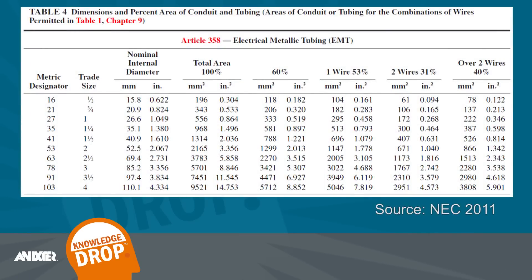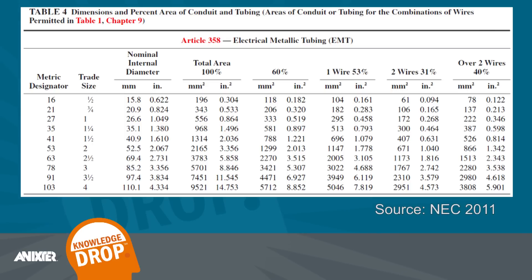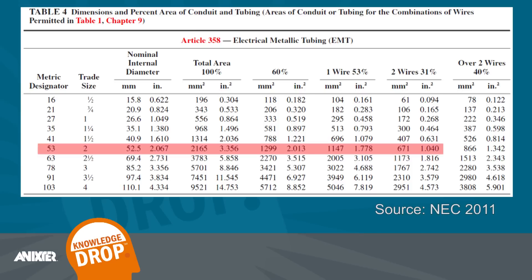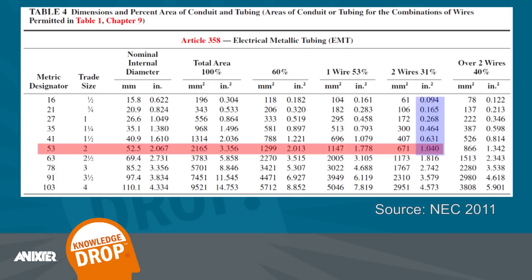Now we move on to our NEC standards. Looking in NEC 2011 Chapter 9, Table 4, we see various conduits and conduit allowances. You have to select your conduit material, which in our case is EMT. Looking at the EMT table, we look at our trade size, which is 2. Then we look at our maximum fill allowance, which is 31% for two conductors. As you can see, the NEC requires a maximum fill area of 1.04. Our calculated number was 0.48, which is less than 1.04. Therefore, it's appropriate for this application.